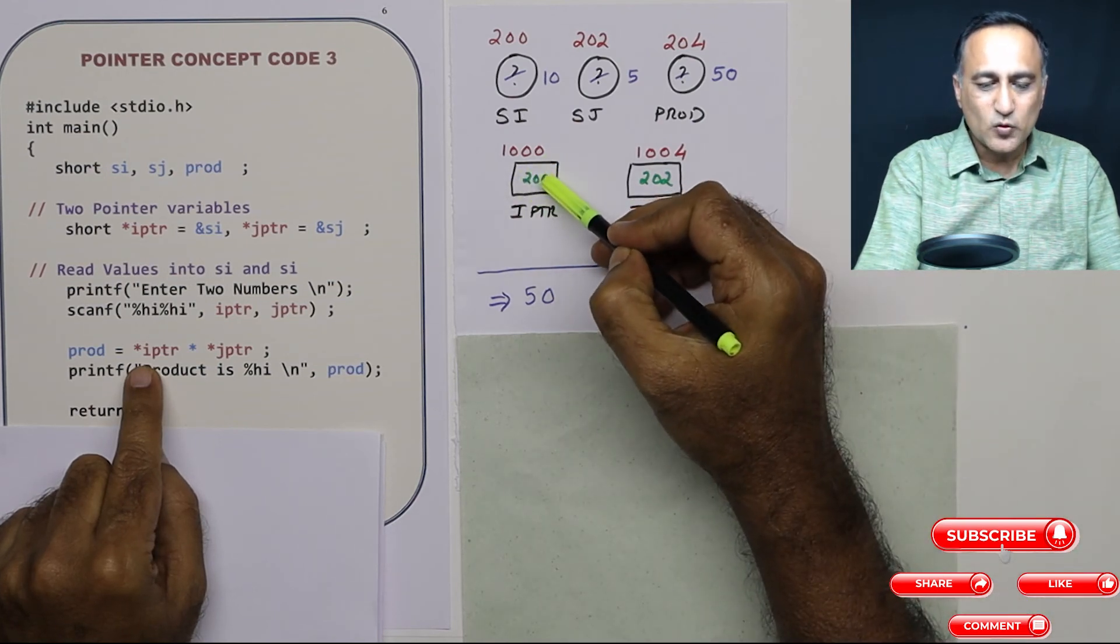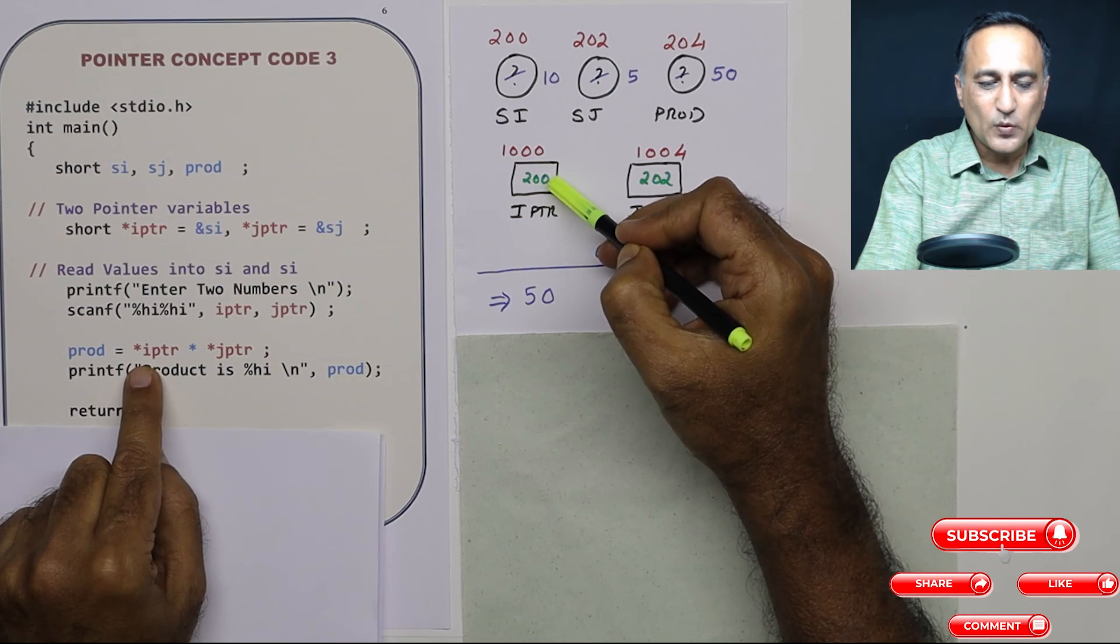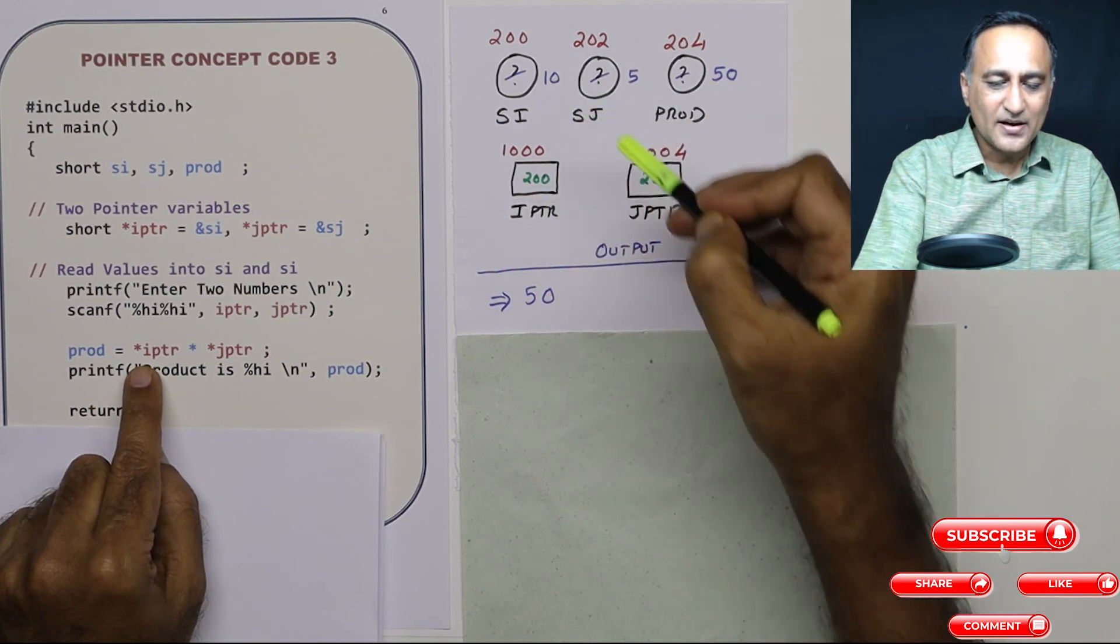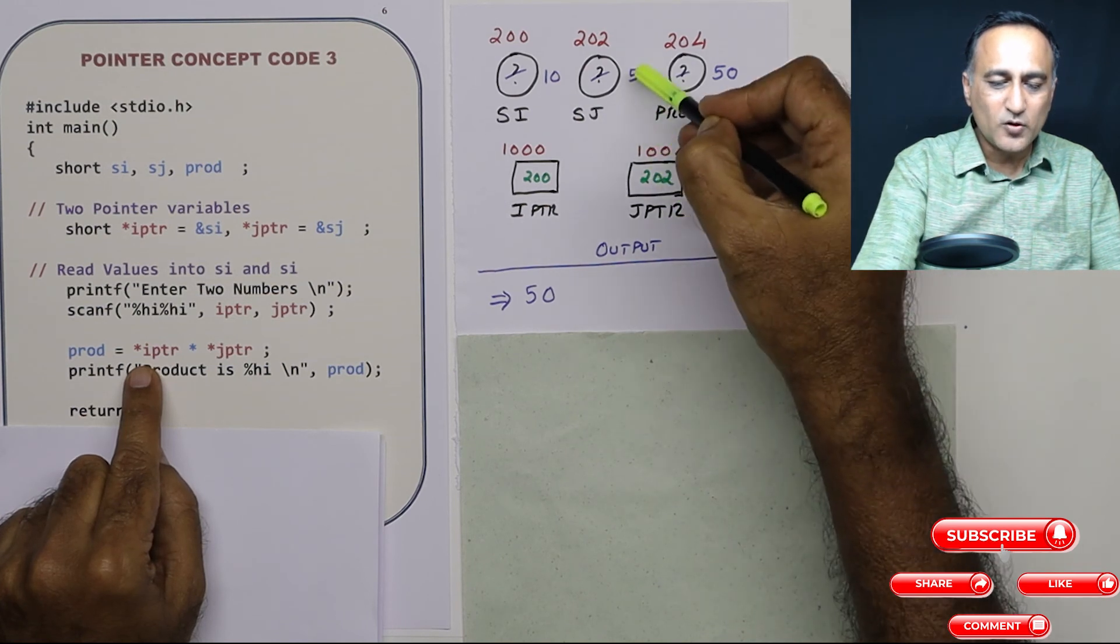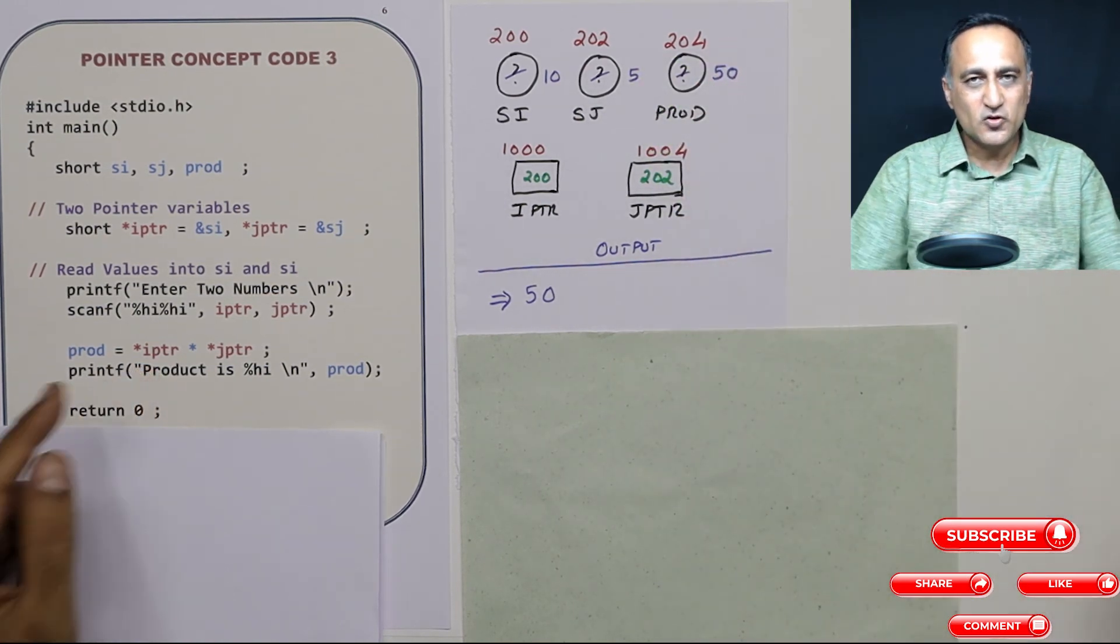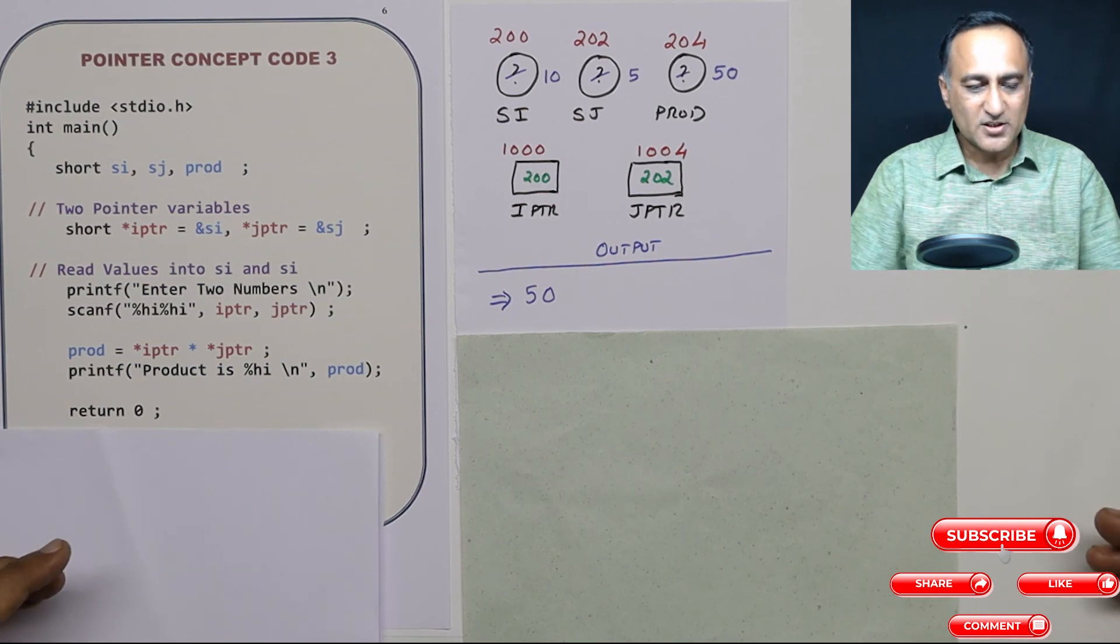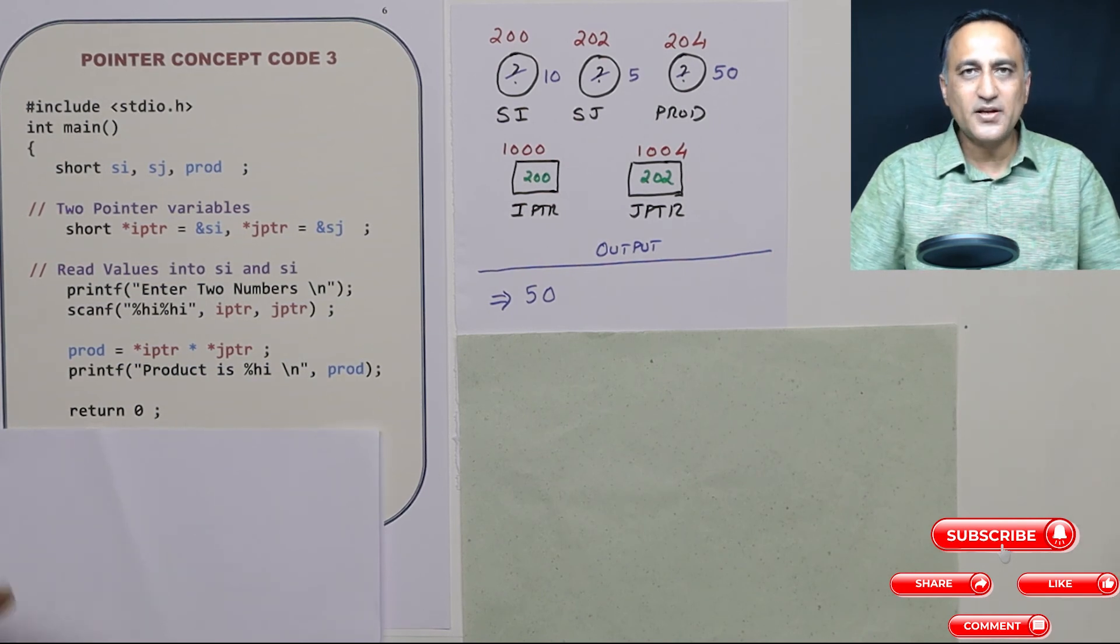So if I put a star next to 200, what is the value at address 200? If I put a star next to 202, what is the value at address 202, which is 5. So that's all you need to understand. If you have got it, this is all there is to pointers.